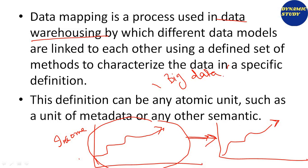When we talk about different sets of methods — for example in stats — when you link data, they can be different methods. We link the data so that we can provide a specific definition, meaning a specific meaning to them. We call this process data mapping. The definition can be an atomic unit, such as a unit of metadata or any other systematic data. Any single unit that you link together so that we can interpret systematic knowledge from that data — that is known as data mapping.